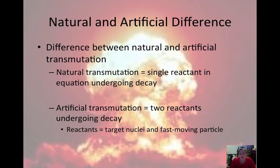The difference between natural and artificial transmutation is that when you're looking at the equation, natural transmutation will just have one reactant and will have more than one product. And in artificial transmutation, you have more than one reactant. So there's more than one substance on the left side of the equation. The reactants in artificial transmutation are the target nuclei and the fast-moving particle that you're using to make the transmutation occur.